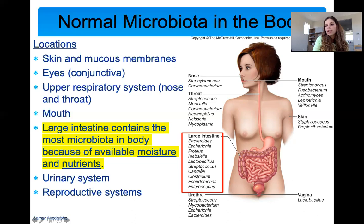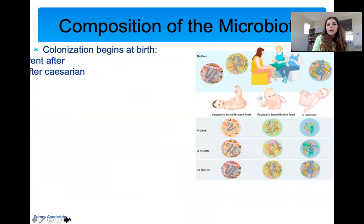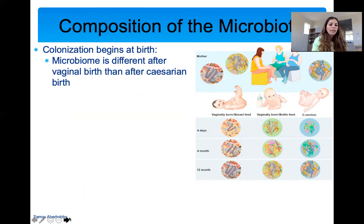This is the normal microbiota, and it differs from person to person. The composition of your microbiota begins at birth, and it will be different whether you were born vaginally or through a C-section. Scientists have noticed that when you look at the microbiome of babies born vaginally versus those born by C-section, you see a different composition of bacteria.